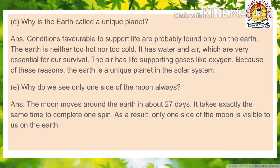Question number E: Why do we see only one side of the Moon? Answer: The Moon moves around the Earth in about 27 days. It takes exactly the same time to complete one spin. As a result, only one side of the Moon is visible to us.